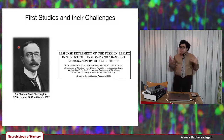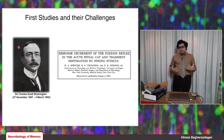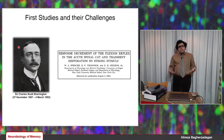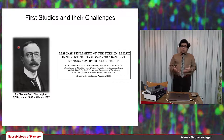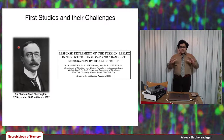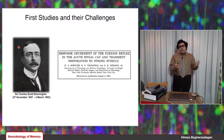At that time, there were certain challenges that prevented scientists from further investigating habituation at the cellular or molecular level. One of those challenges was the very intricate and sophisticated neuronal circuitry of mammals and vertebrates.